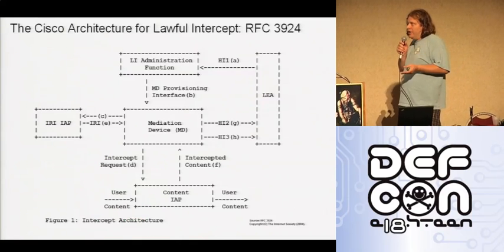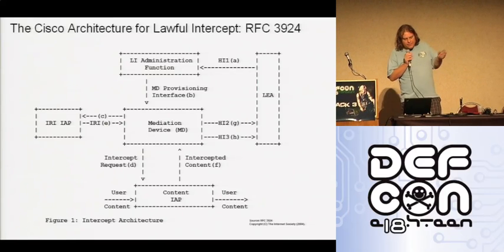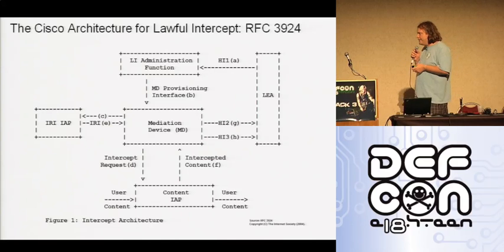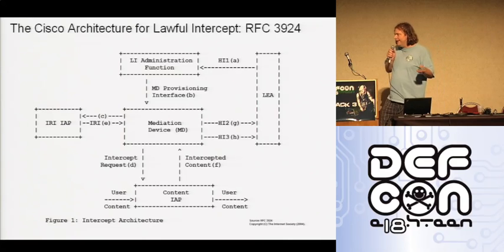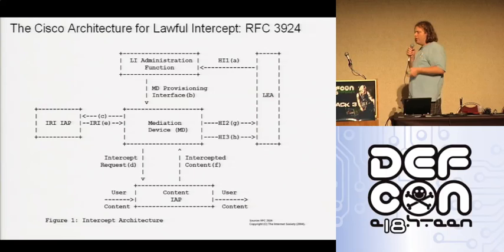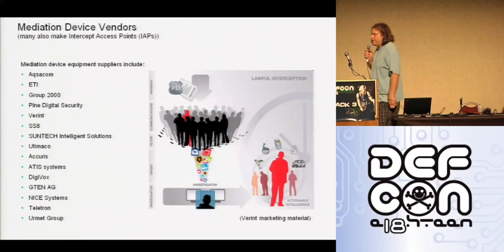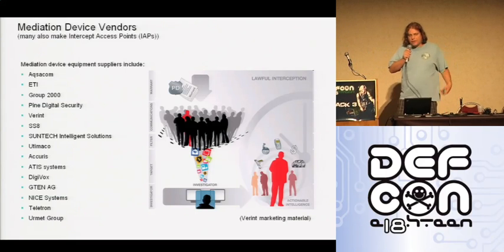The wiretap is provisioned using a mediation device, which is the heart of the wiretapping system. It sends interception requests to various intercept access points — places where data can be collected. The data is collected and sent back to the mediation device, which packages it and sends it on to the law enforcement agency. There are a number of vendors who make mediation devices compatible with the Cisco architecture for lawful intercepts.